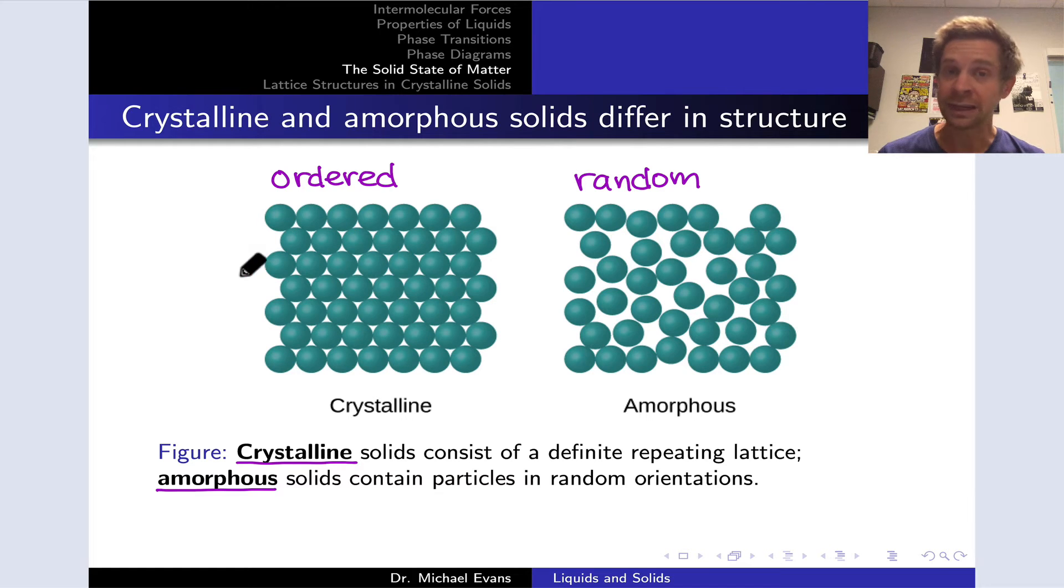If the atoms or molecules freeze in such a way that they form a regularly ordered pattern of atoms or molecules, we get what's called a crystalline solid.